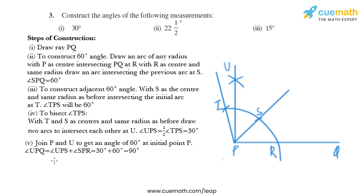We have angle UPQ equal to angle UPS plus angle SPR, which is 30 degrees plus 60 degrees, giving us angle UPQ equal to 90 degrees.